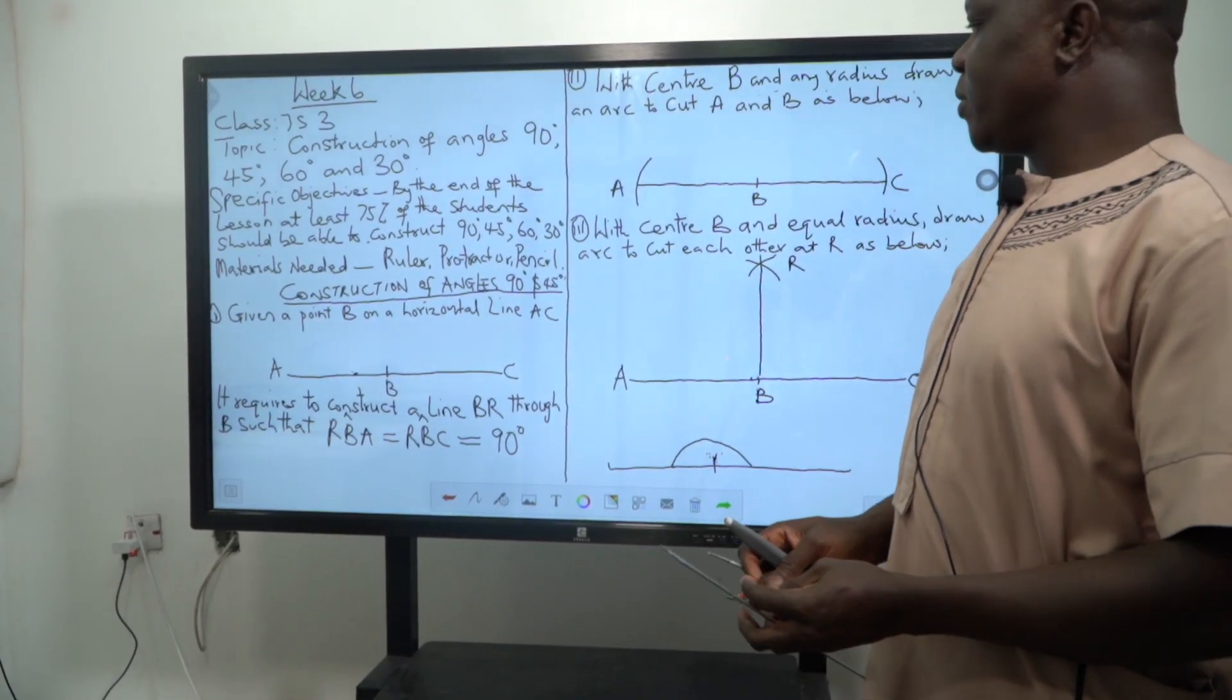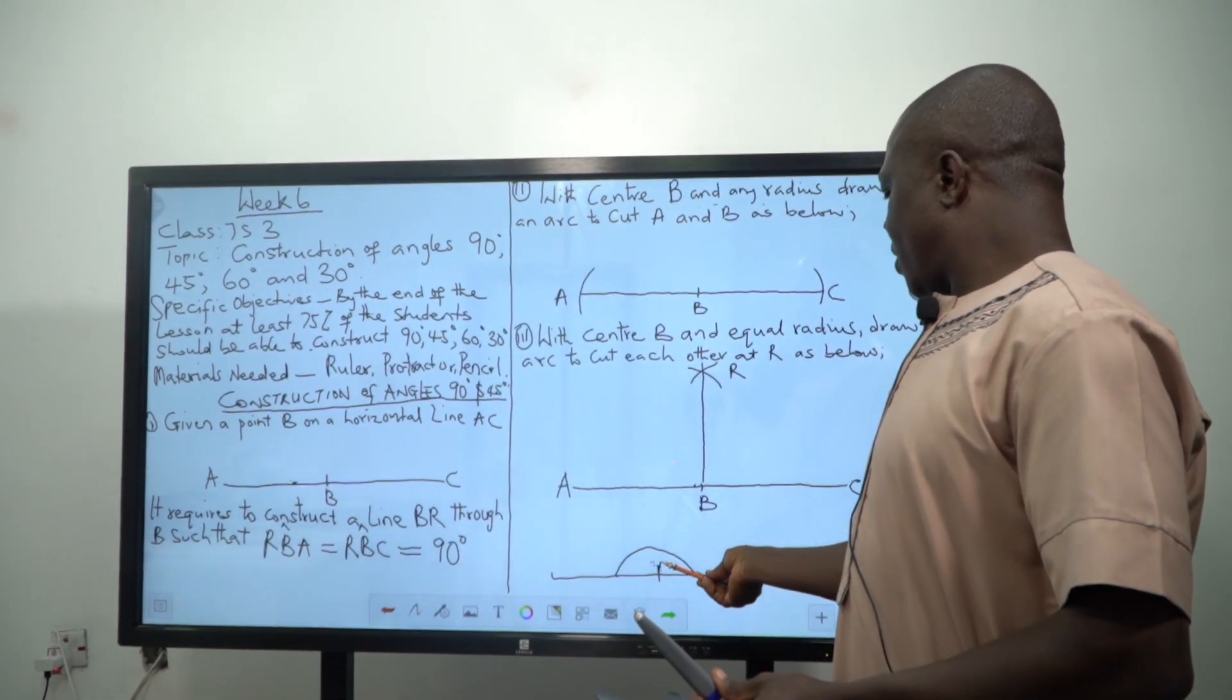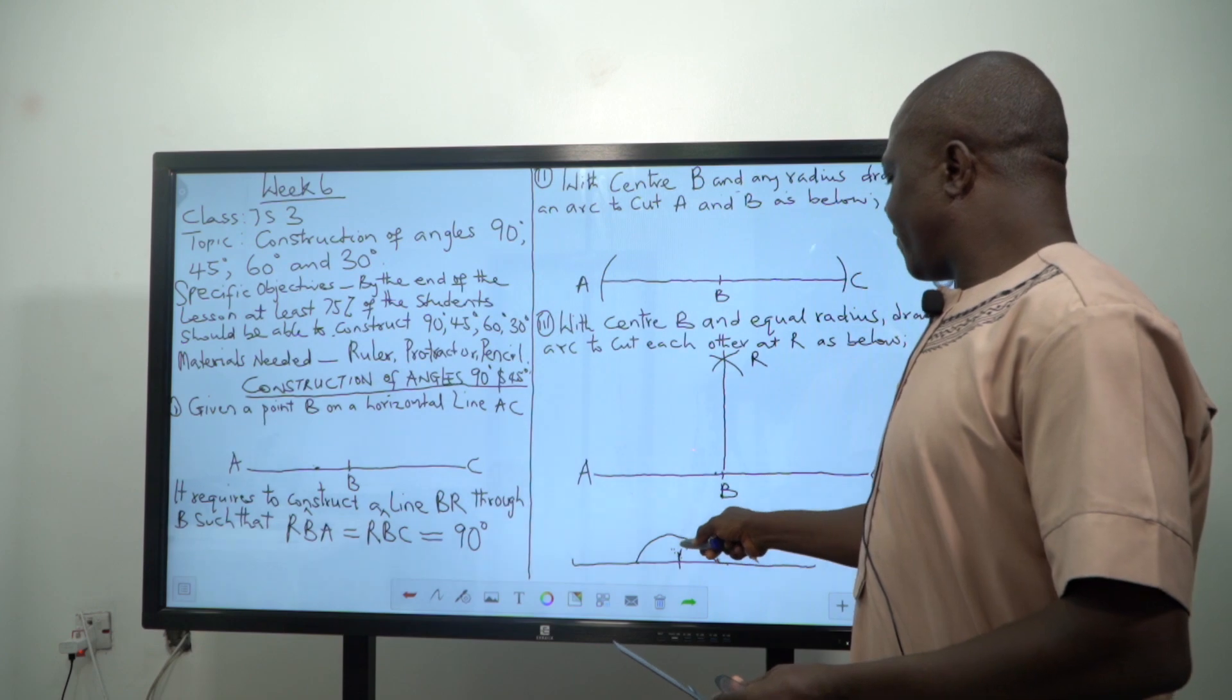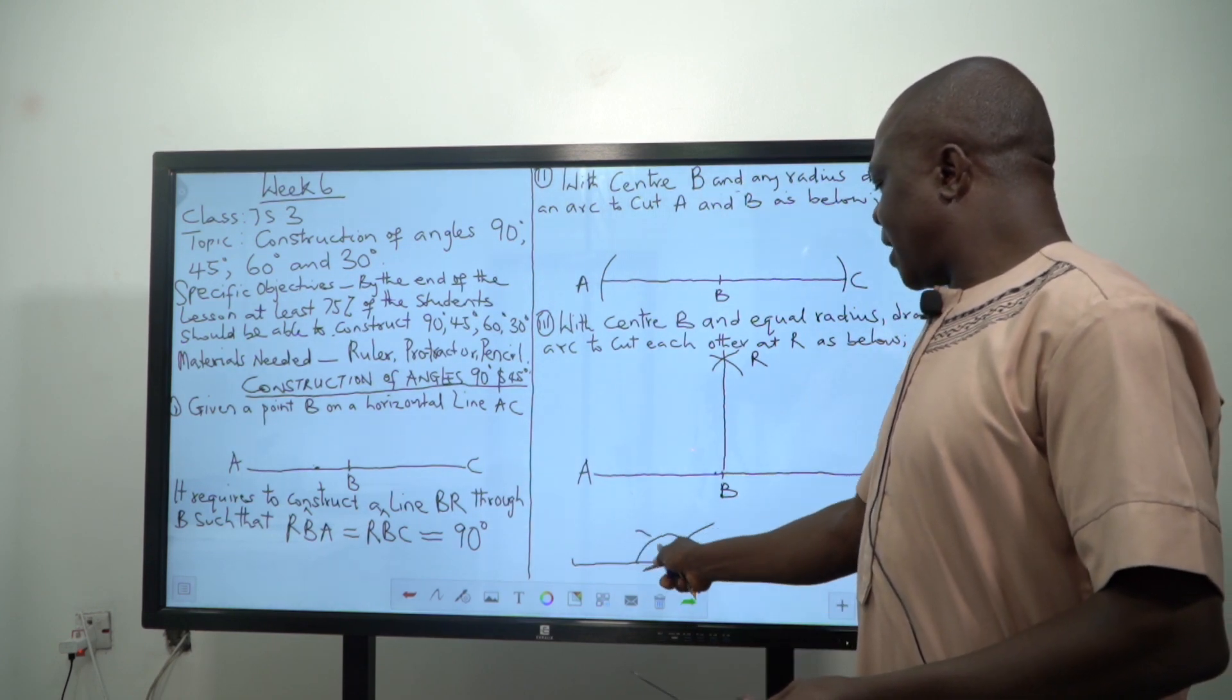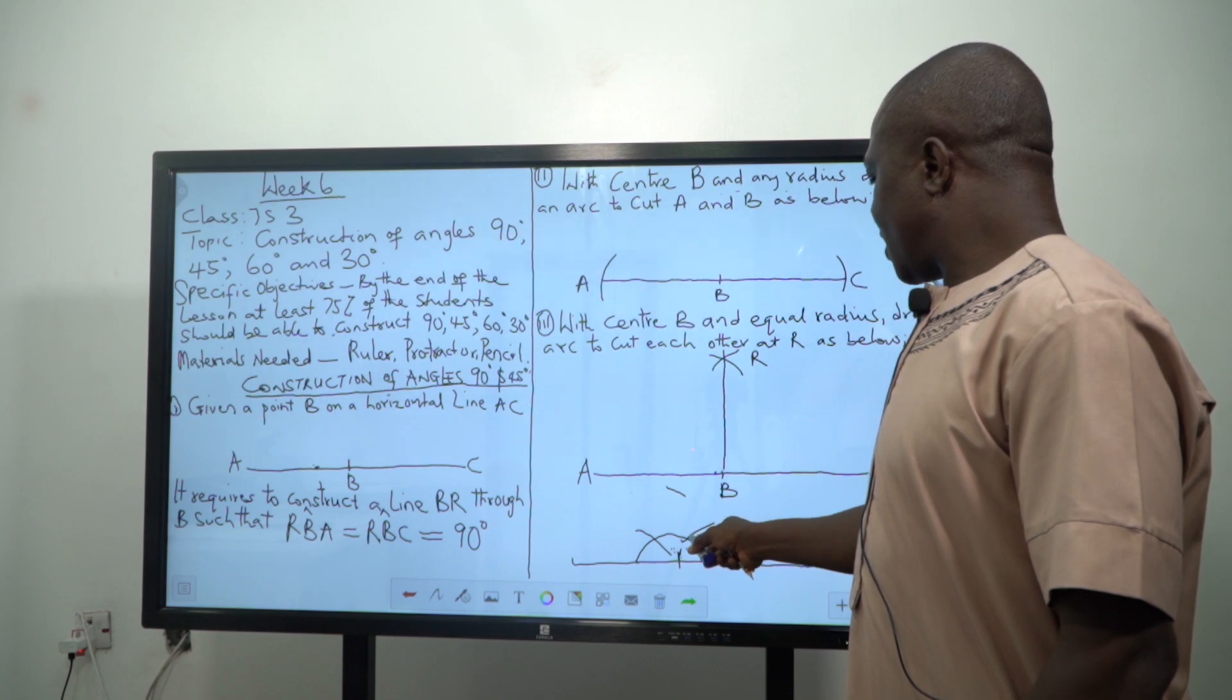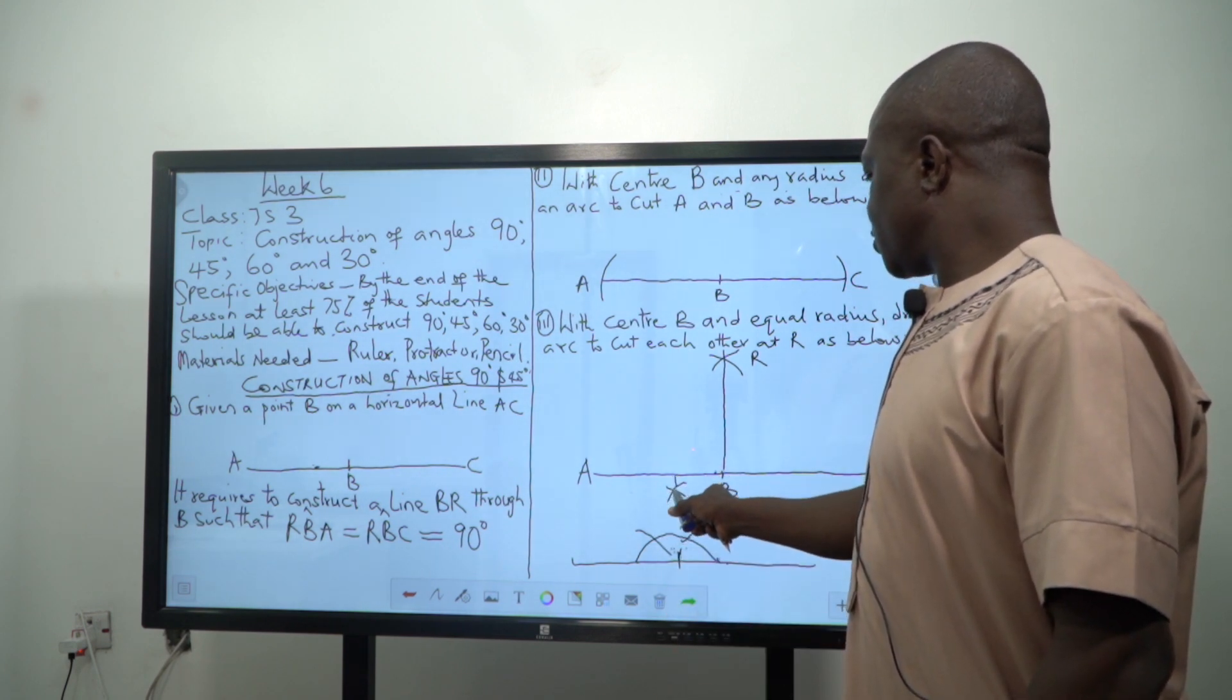Then the next thing you will do is that you will place the pointed end at the one end of the semicircle and allow it to touch the semicircle. If you touch, you will have a thing of this kind. You put it this side and you will have something of this kind. When you place it here you have another one, place it here you have another one.